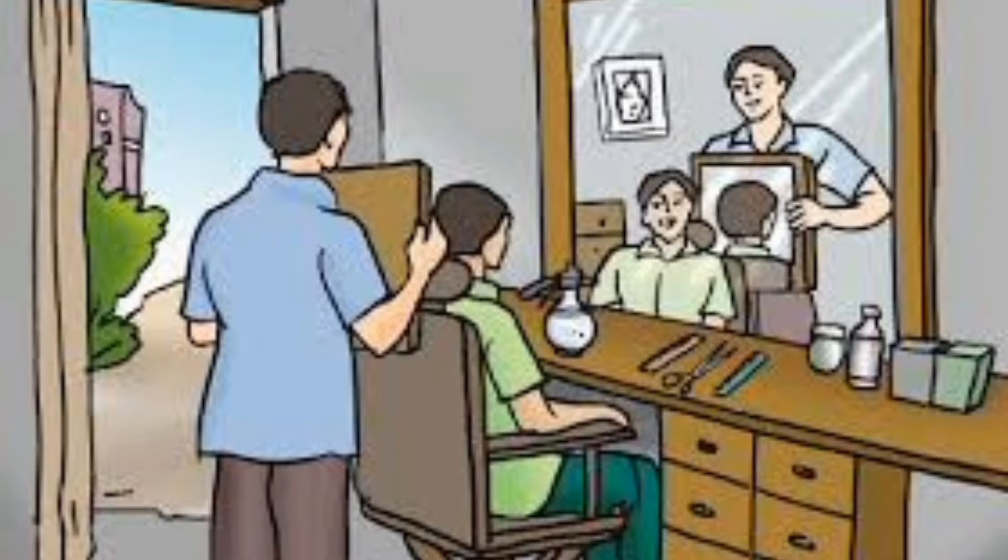Do you know how you could see the hair at the back of your head? When two mirrors are placed opposite to each other, the first mirror reflects the light that falls on its surface. When this reflected light falls on the second mirror, it reflects the light again.